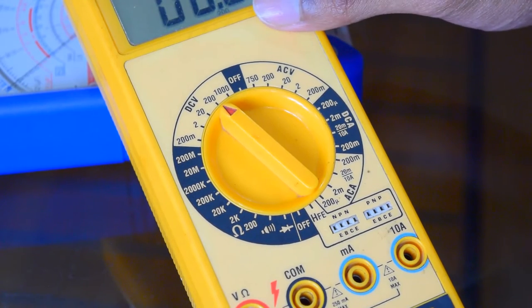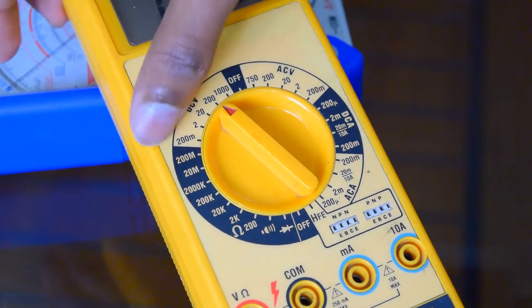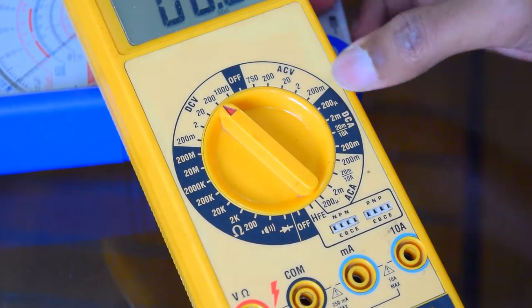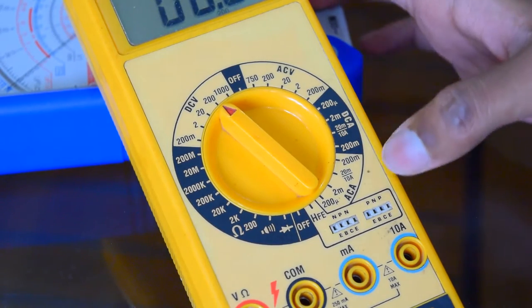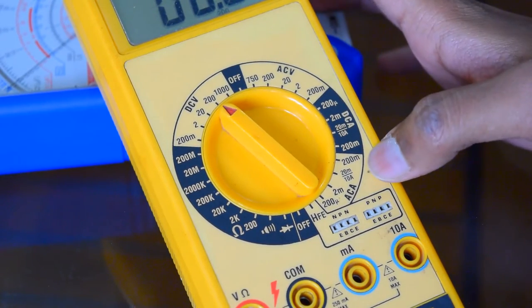Now I'll show you what you can measure using this multimeter. This is the DC voltage range and this is the AC voltage range. Using this range, you can measure the DC amperes of a device and this is the AC amperes rating of a device.